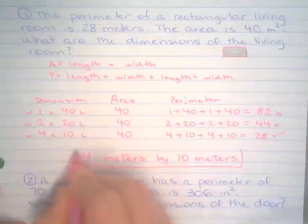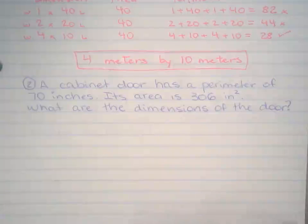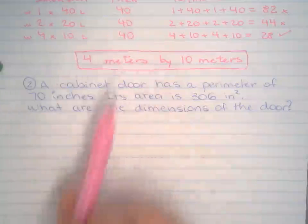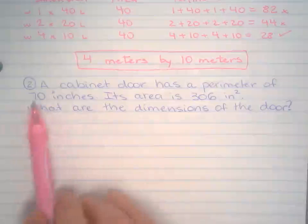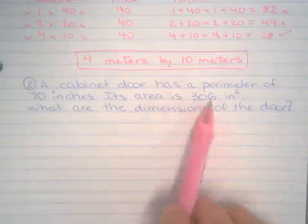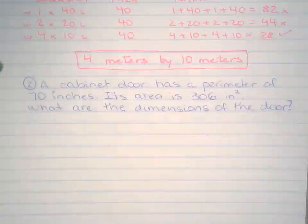And of course it has to be the last one, one of those things. But the good thing is I'm going to show you a trick in the calculator that will kind of help out on that. So for number 2, a cabinet door has the perimeter of 70 inches. The area is 306. What are the dimensions? So the question is pretty much asking you the same thing.